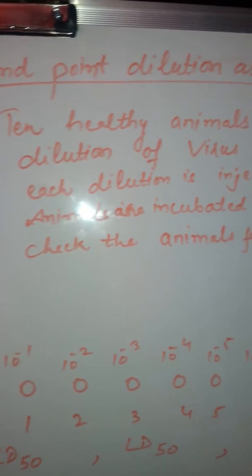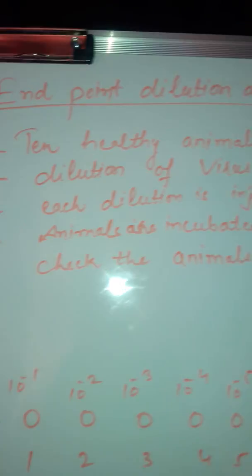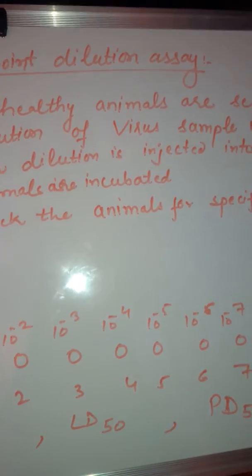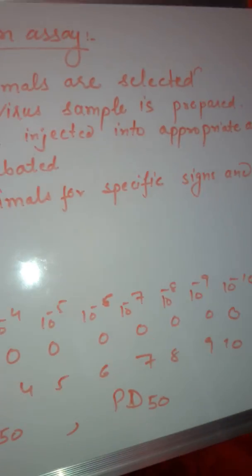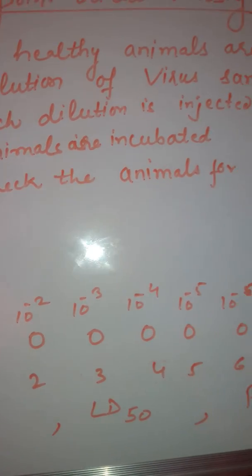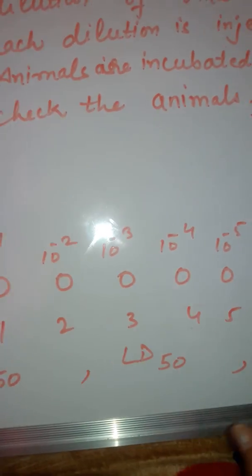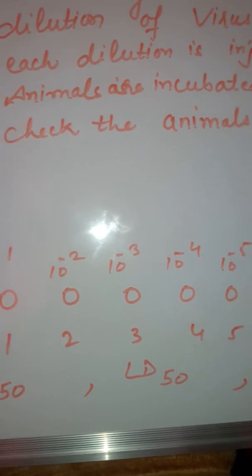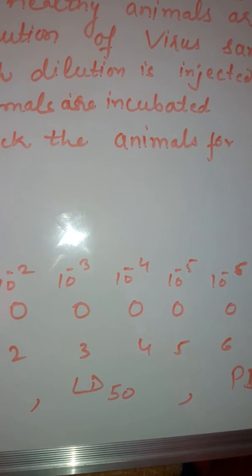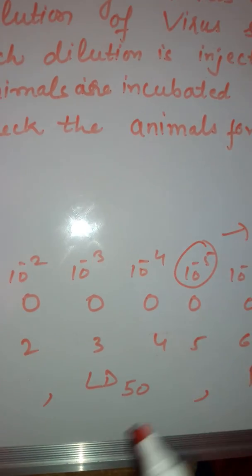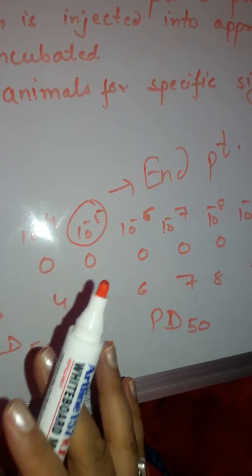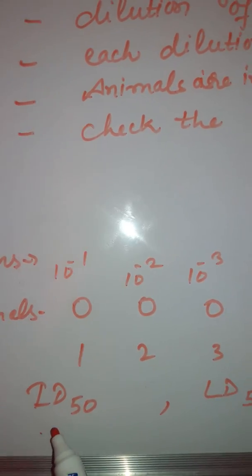The next method is the endpoint dilution assay, which is very important. In this method, 10 healthy animals are taken that are free from any kind of disease. Serial dilutions of the virus sample are prepared, and each dilution is injected into the appropriate animal. The animals are incubated and checked for specific signs of infection. As the dilution increases, infection will not be indicated in the animals. After a certain dilution — suppose 10 to the power minus 5 — the animals are not infected, so this is the endpoint.